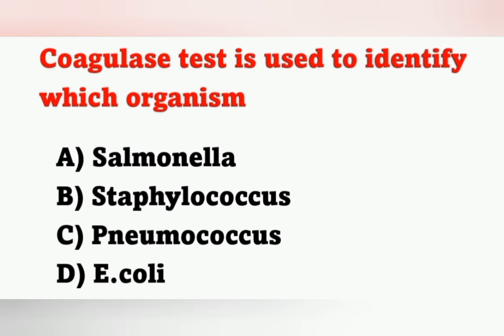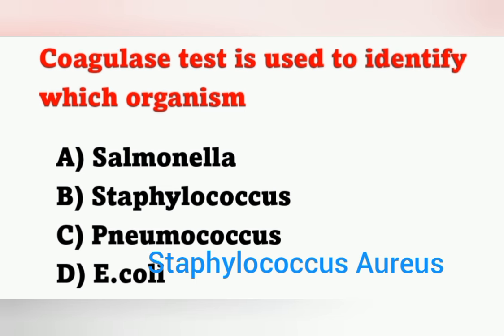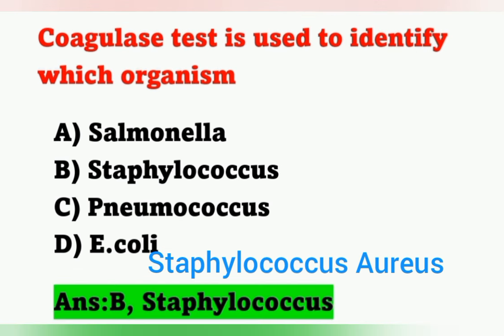The next question: coagulase test is used to identify which organism? Options: Option A, Salmonella; Option B, Staphylococcus; Option C, Pneumococcus; Option D, E. coli. The coagulase test is used to identify Staphylococcus. Option B is the correct answer.